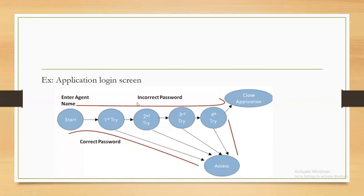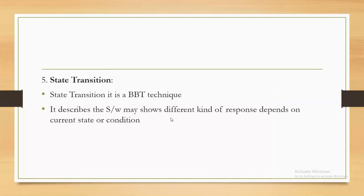So the same transaction — entering an incorrect password — only shows an error message for the first three attempts. But on the fourth time, in sequence order, not only is the error message shown, the application is also closed. That's what we are saying: the software shows a different kind of response depending on the current state or condition.